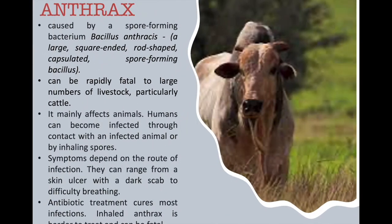Another zoonotic disease is anthrax. This is caused by a spore-forming bacterium, Bacillus anthracis, which is a large square-ended rod-shaped capsulated spore-forming bacillus. It can be rapidly fatal to large numbers of livestock, particularly cattle. Humans can become infected through contact with an infected animal or by inhaling spores. Symptoms depend on the route of infection and can range from skin ulcers with a dark scab to difficulty breathing. Antibiotic treatment cures most infections, but inhaled anthrax is harder to treat and can be fatal.